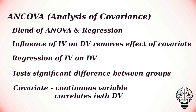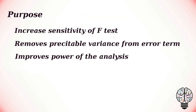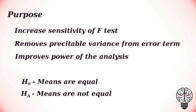A covariate is a continuous variable that correlates with the dependent variable. The purposes of ANCOVA are to increase the sensitivity of the F-test, remove predictable variance from the error term, and improve the power of the analysis.